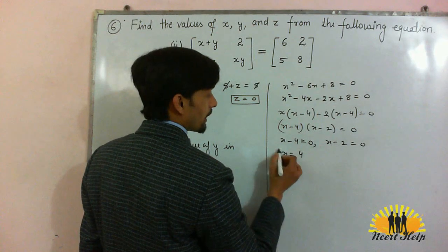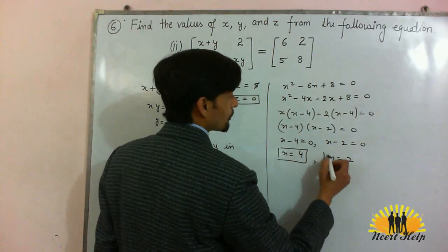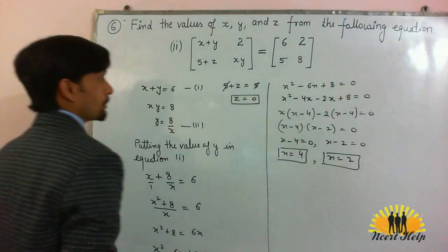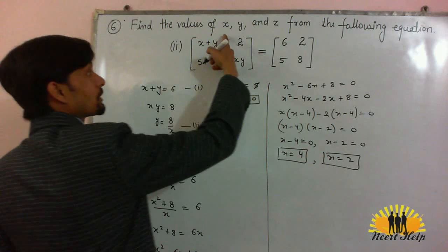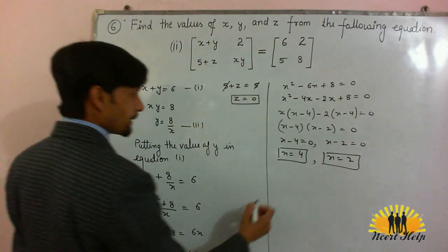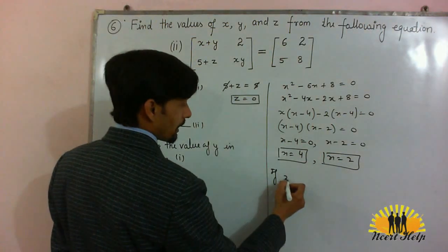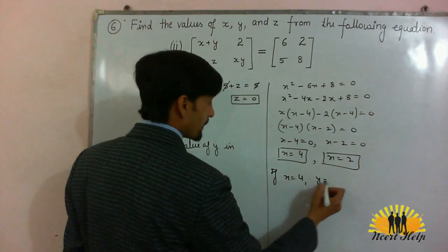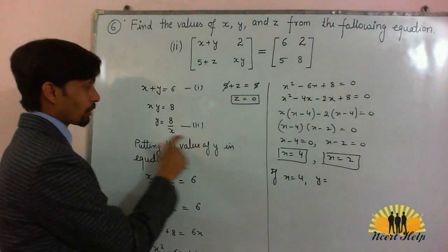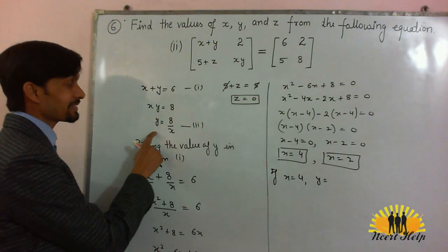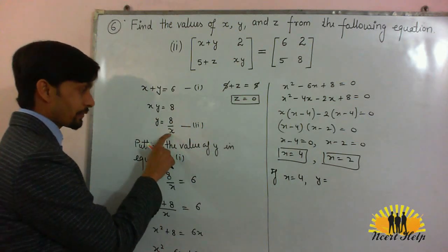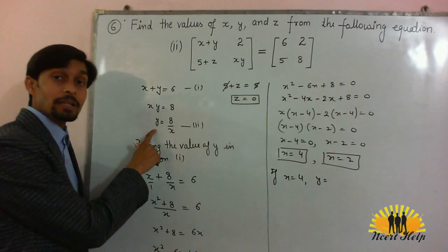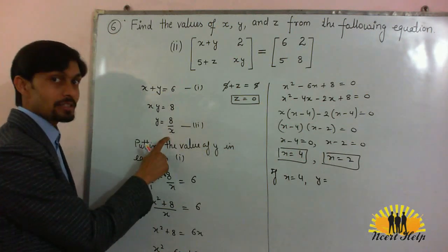So the roots are x is equal to 4 and x is equal to 2. So the pair, the set of values for x, y and z will be: if x is equal to 4, y will be according to equation 2, y is 8 by x. If x is 4, y will be 8 divided by 4, that is 2.